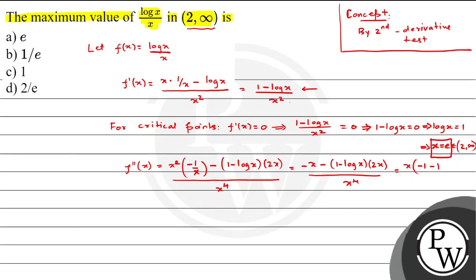After simplifying, taking x common and cancelling, we get f''(x) = (-2 + log x) / x³, which equals (log x - 2) / x³. Now, the second derivative test: at the critical point, if f''(x) < 0, the function has a maximum value; if f''(x) > 0, the function has a minimum value.